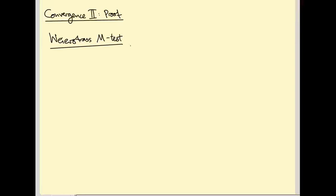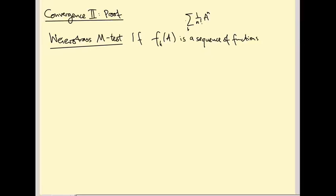Don't worry too much if you haven't come across uniform convergence before. The M-test says: if F_k of A is a sequence of functions — and here A is going to be a matrix and F_k is the partial sum defining the exponential function, that is the sum of (1/N!) A^N from N equals 0 up to K — then we can apply the test.